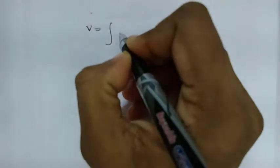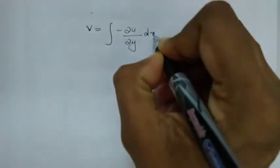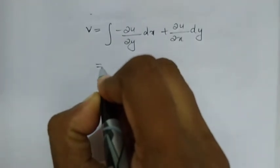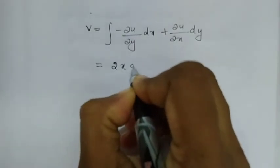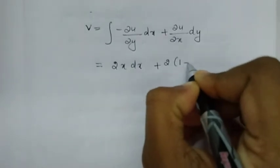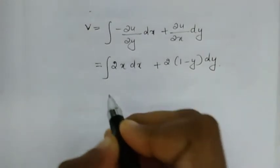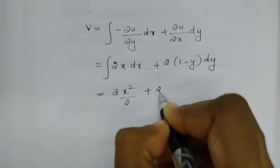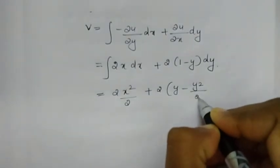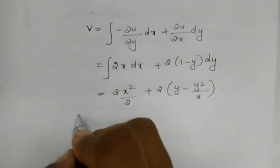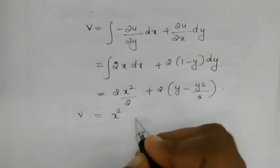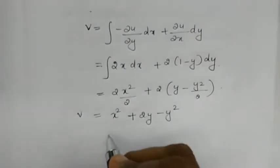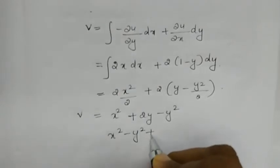Now finding the conjugate: v = integral of [−(∂u/∂y)dx + (∂u/∂x)dy]. Here −∂u/∂y = 2x and ∂u/∂x = 2(1 − y). So v = integral of [2x dx + 2(1 − y)dy] = x² + 2y − y². Therefore, v = x² − y² + 2y.